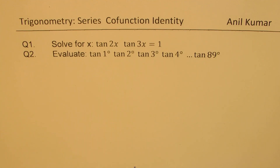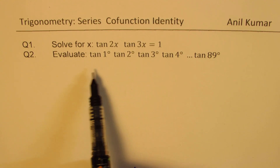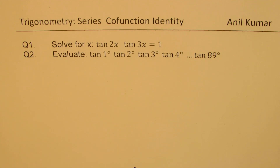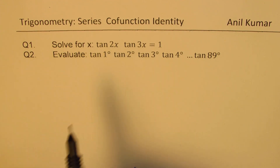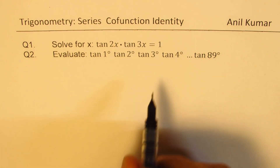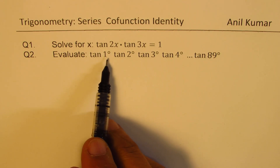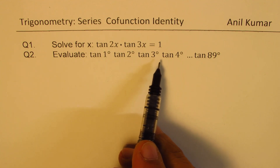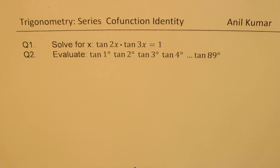I'm Manil Kumar. Welcome to my series on trigonometry. We'll now take a few series related with trigonometry functions. Here are two examples we'll work with tangent ratio first. Question number one: solve for x where tan 2x times tan 3x is equal to 1. And question number two: tan 1 degrees times tan 2 degrees times tan 3 degrees times tan 4 degrees till tan 89 degrees is what? So we need to evaluate these values.